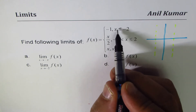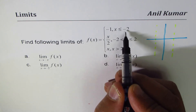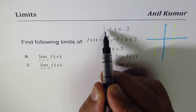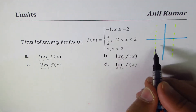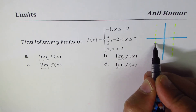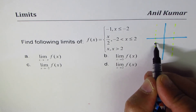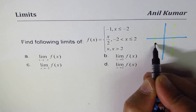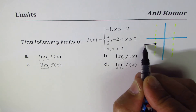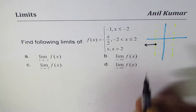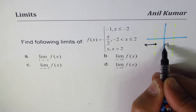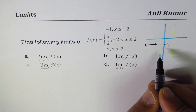For x less than or equal to -2, the function equals -1. Since the interval includes -2, we have a filled-in circle at the point (-2, -1), and the line extends to the left at y = -1.